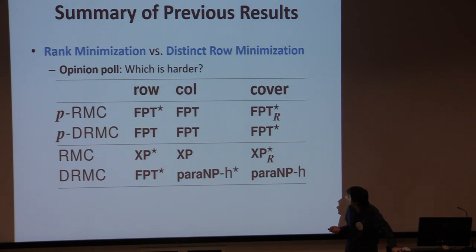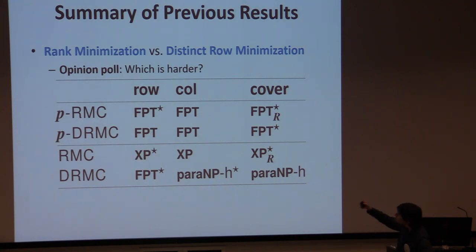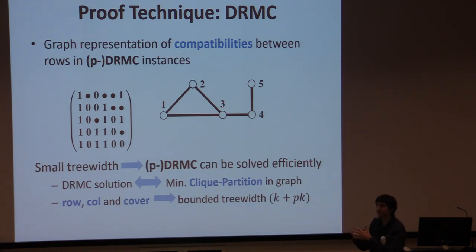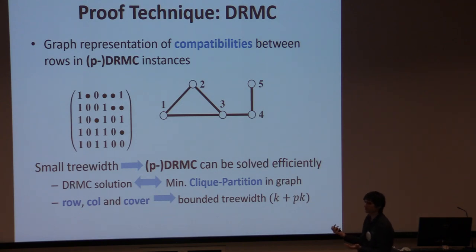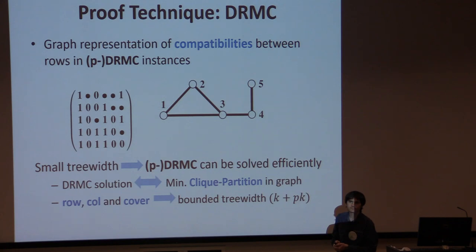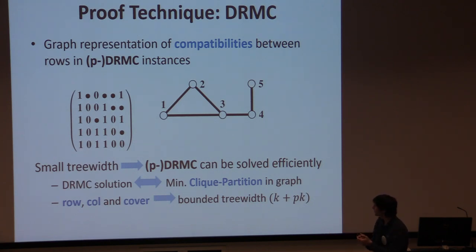I'll quickly sketch how we get these results. For distinct row matrix completion, you can draw a graph where the rows are vertices, and you make edges between vertices if and only if the rows can be made the same because of the missing entries. This distinct row matrix completion is like finding a clique partitioning in the graph. If the treewidth is small, we can solve this clique partitioning problem efficiently with an FPT algorithm. In the bounded domain case, any bounded parameter gives bounded treewidth; in the unbounded domain case with bounded number of rows, it becomes an instance of vertex cover.